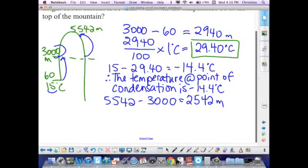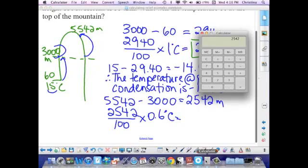We're going to take that 2542, divide by 100, and this time times it by 0.6 degrees Celsius, because the temperature drops at a rate of 0.6 degrees Celsius for every 100 meters traveled. So 2542 divided by 100 times by 0.6 gives us an answer of 15.252.